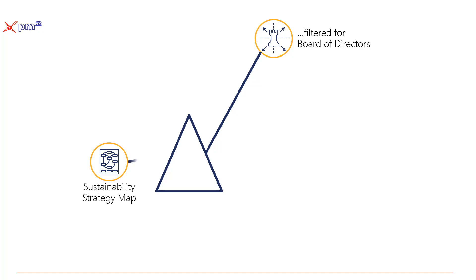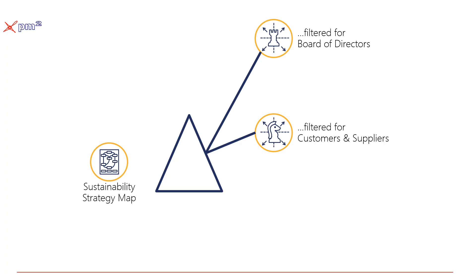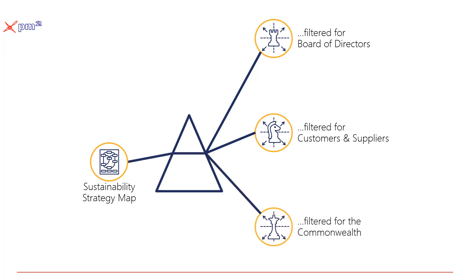That same strategy map, through a slightly different filter or prism, can be used to communicate to outside stakeholders like customers or suppliers — what you do to help support them, and what we expect from them to support us. Another pass through the prism might show a view for the Commonwealth Board, allowing them to see what we're doing towards society, the environment, and the employees.